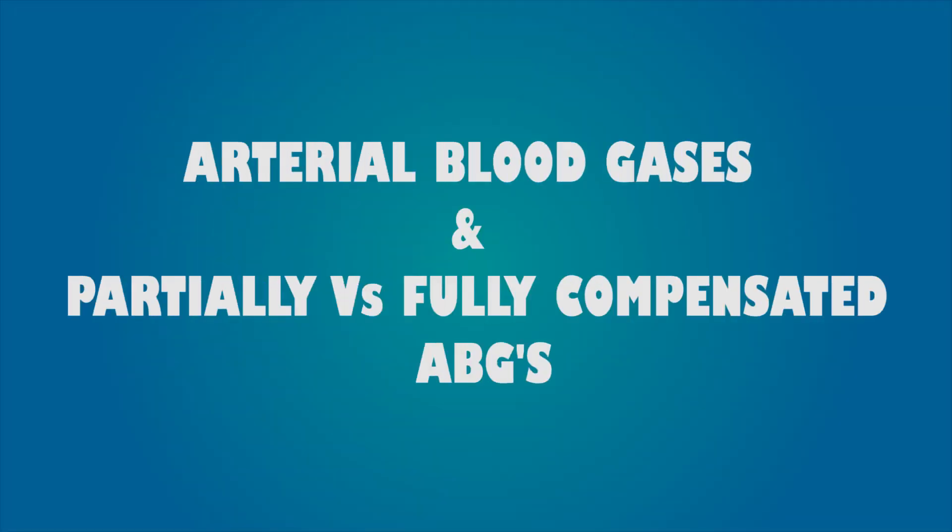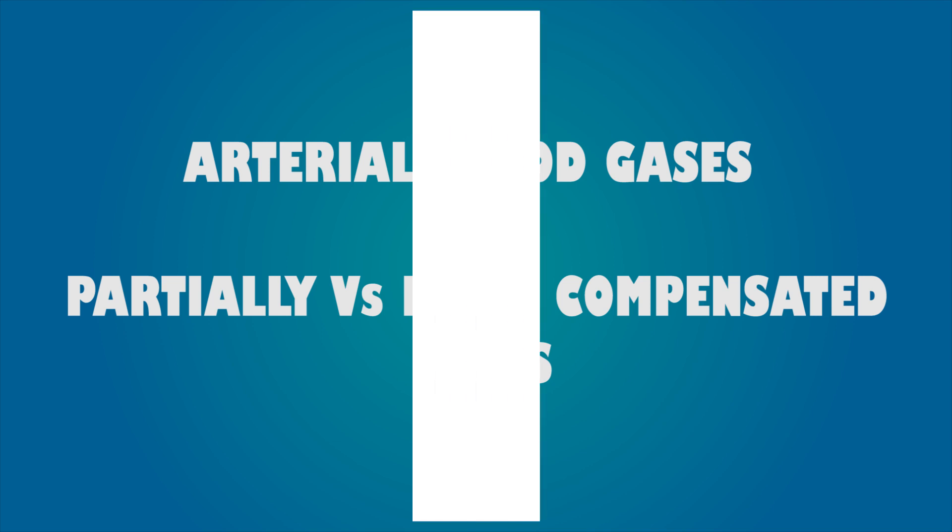Welcome to RN Medical Lectures. Today we are going to talk about how to solve ABGs — that is arterial blood gases — and what are partially or fully compensated ABGs. At the end of the video you will be able to tell whether the patient has respiratory acidosis or respiratory alkalosis, metabolic acidosis or metabolic alkalosis, and what is partially or fully compensated ABGs.